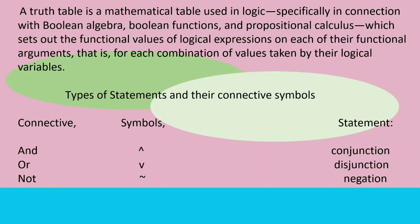A truth table is a mathematical table used in logic, specifically in connection with Boolean algebra, Boolean functions, and propositional calculus, which sets out the functional values of logical expressions on each of their functional arguments — that is, for each combination of values taken by their logical variables.